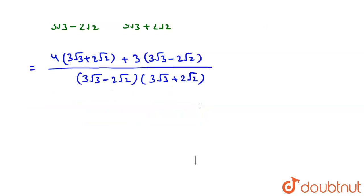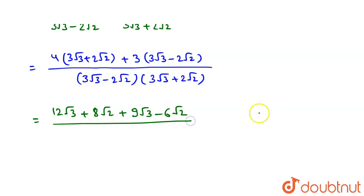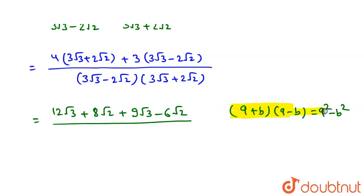In the next step we open the bracket in the numerator. So we get 4×3√3 = 12√3 plus 8√2, plus 9√3 minus 6√2. For the denominator, we use the formula (a+b)(a−b) = a²−b², where a = 3√3 and b = 2√2. So the denominator becomes (3√3)² − (2√2)².